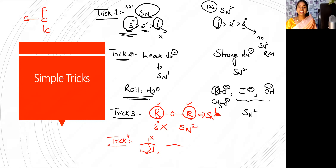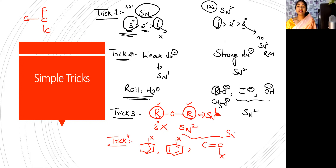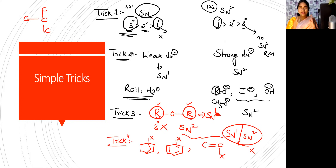When there are aryl halides — halogen connected to the benzene ring is called an aryl halide — there is no SN1 or SN2, there is no substitution reaction. And coming to vinyl halides, there is no substitution reaction. In these three cases you cannot see SN1 or SN2 — there will be no reaction. By using just these four points, you are going to solve any number of questions.